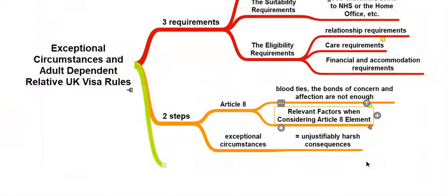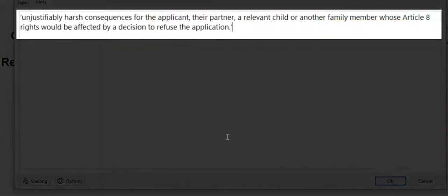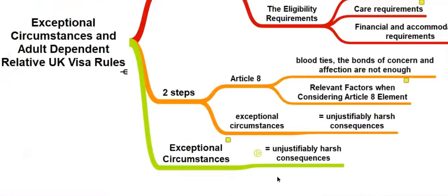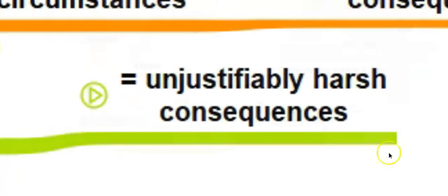If the decision maker establishes the existence of Article 8 elements, they will need to assess whether there are any exceptional circumstances that would render refusal a breach of Article 8. According to the rules, a breach will arise if such refusal would result in unjustifiably harsh consequences for the applicant, their partner, a relevant child, or another family member whose Article 8 rights would be affected by a decision to refuse the application. The Home Office and case law explain that 'exceptional' does not mean unusual or unique. Instead, exceptional means circumstances in which refusal would result in unjustifiably harsh consequences such that the refusal would be disproportionate under Article 8.